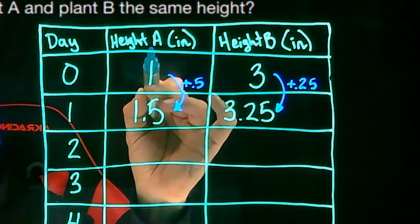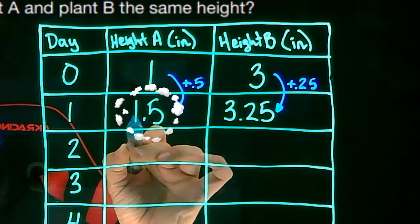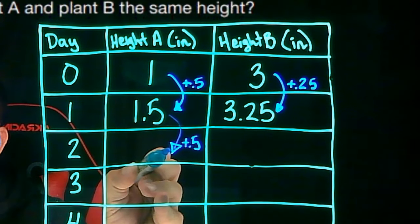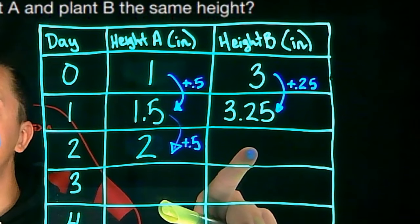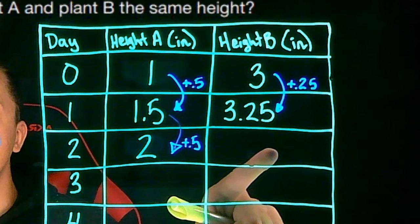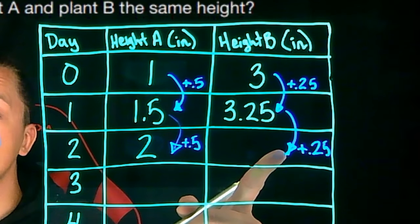By day two, plant A will have gone from 1.5 inches tall plus 0.5 inches for a total of 2 inches. And on day two, plant B will have grown from 3.25 plus 0.25 to a total of 3.5 inches tall.